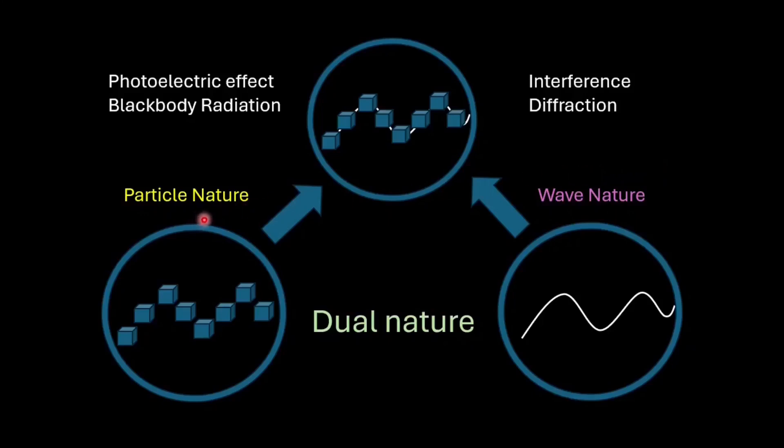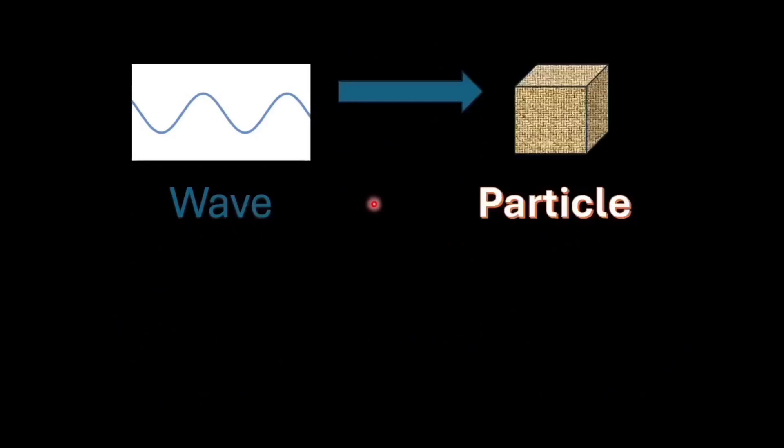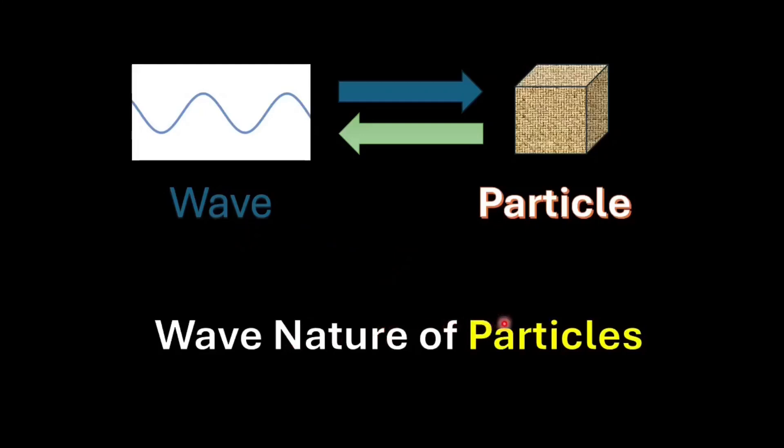When interacting with matter, light behaves as a particle and during propagation, it predominantly shows wave-like properties. The realization that light, which was traditionally understood as a wave, could also exhibit particle-like behavior, led scientists to consider the reverse possibility that particles may also display wave-like behavior. This idea became known as the wave nature of particles and we will explore it further in upcoming videos where we discuss the de Broglie wavelength.